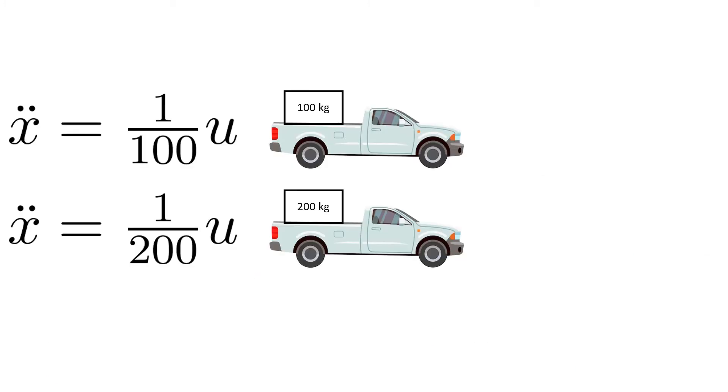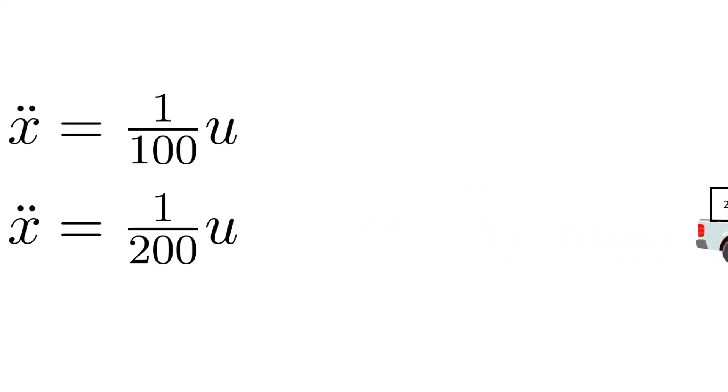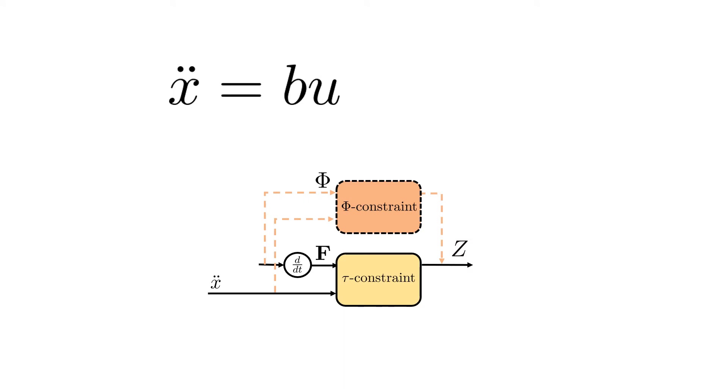Trajectory estimation is only one of many applications for our constraint. We also consider an interesting problem in robotics where the gain between the control effort and acceleration is unknown. In this case, we show that our constraints allow control effort to be used in place of measured acceleration.